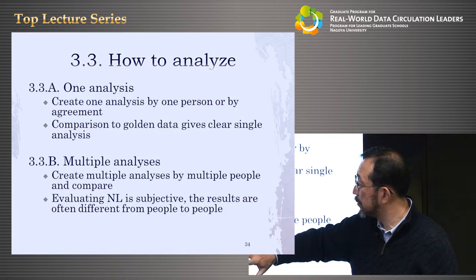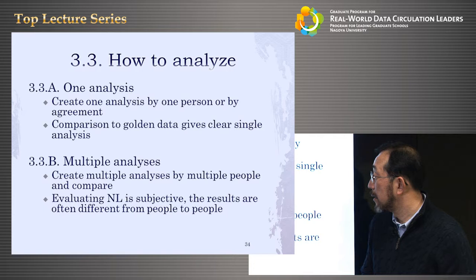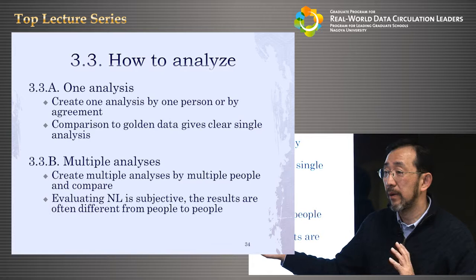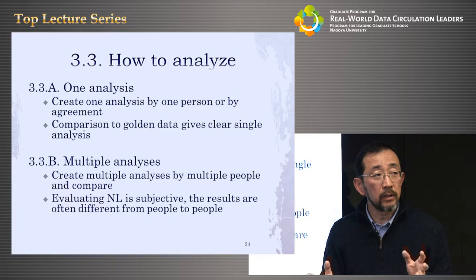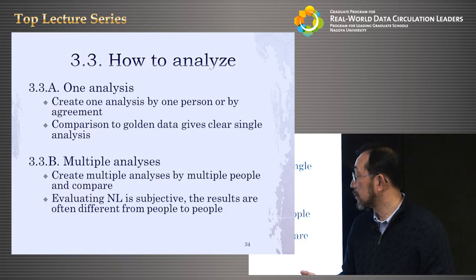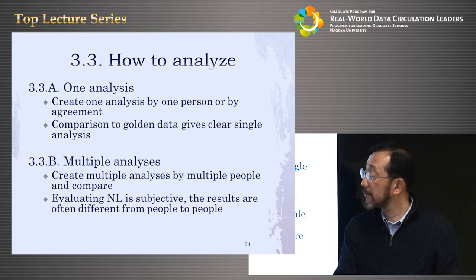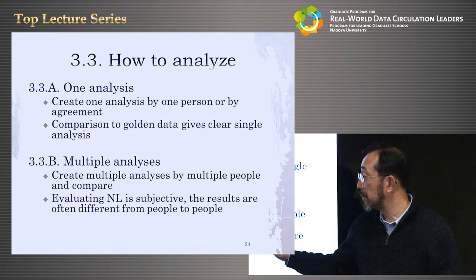However, several groups did multiple analyses — multiple analyses created by multiple people and compared. This is because natural language is very subjective: you understand a sentence one way, and another person may understand the same sentence differently. So the analysis of errors done by different people can be different.